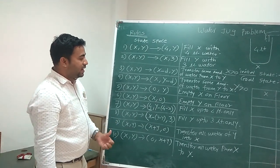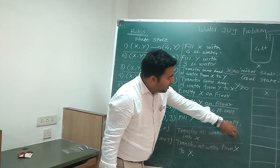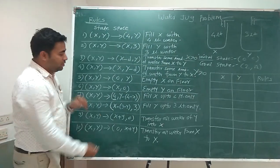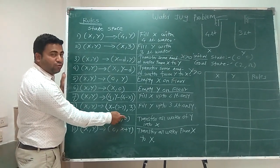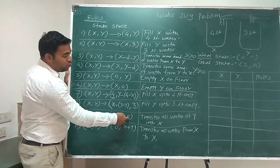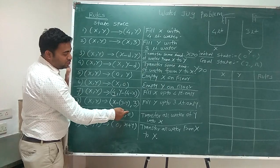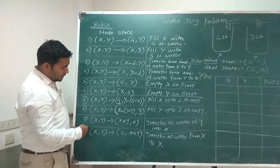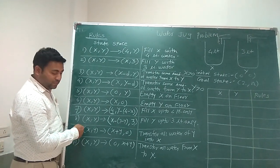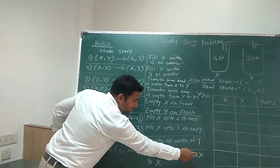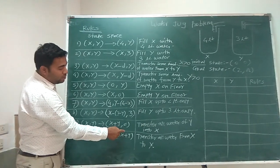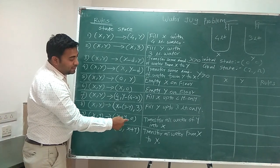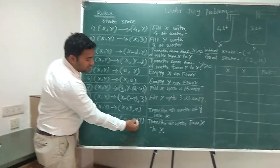Rule 9 says: transfer all the water from y to x. Whatever water remains in the second jug is transferred to the first jug, making the value of y equal to 0, and the water from y is added to x. Rule 10 is the same as rule 9 but in reverse: transfer all the water from x to y. The value of x becomes 0, and whatever water was in x is added to y. The condition is y greater than 0 and x greater than or equal to 0.